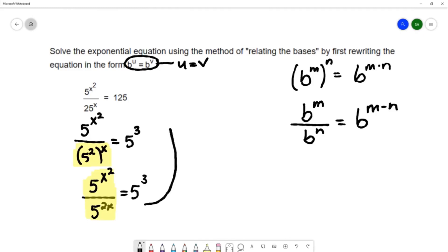So let me draw an arrow and we'll continue simplifying up here. On the left-hand side, I would have 5 to the x squared minus 2x, applying that quotient rule for exponents. I'm going to copy down the right-hand side.